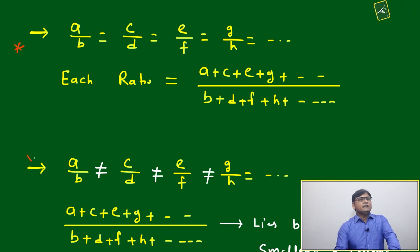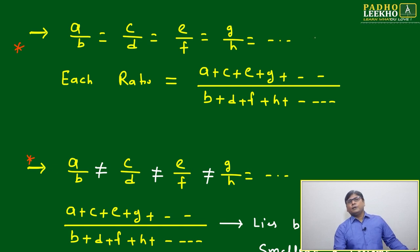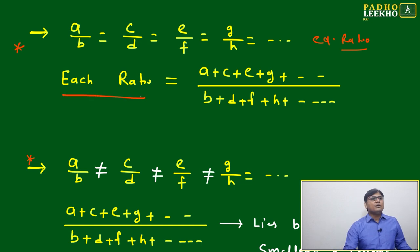Two more results that are helpful from an application point of view. Suppose this proportion is given, where many ratios are given and all are equal. We can say all are in proportion: a by b equal to c by d equal to e by f equal to g by h, and so on. All are equivalent ratios.